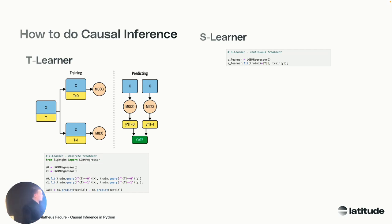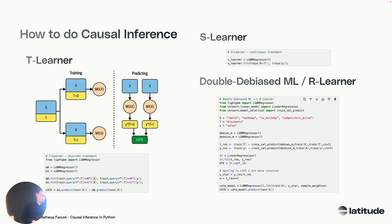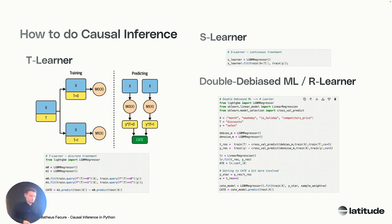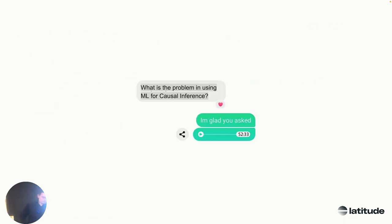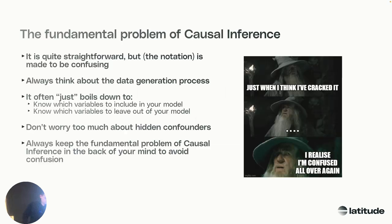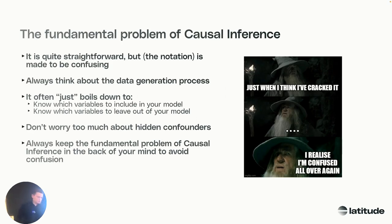There's an even simpler one — the S-learner — and there's also the double debiased machine learning learner, which is also still very easy. Every data scientist will understand it pretty quickly, and there are a lot of packages that have it available now. But behind all of this: we learned causal inference — cool, let's just keep going.